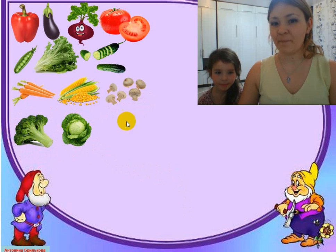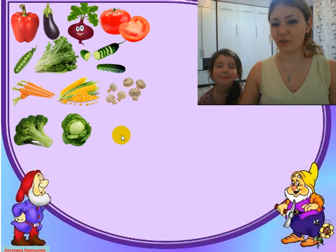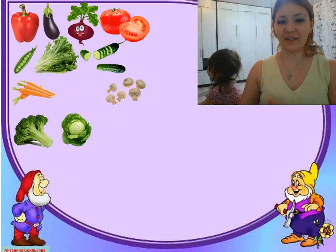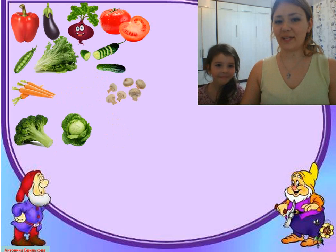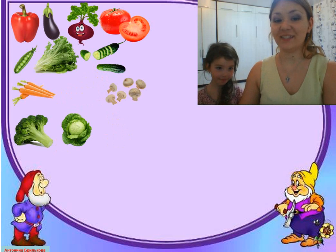Now let's play. Look at this picture. Look very attentively. Okay. Now close your eyes and turn over. Open your eyes. What's absent? What is absent? Yes, that's right. Corn.